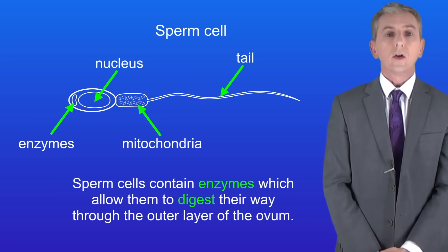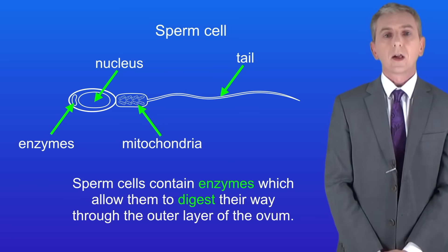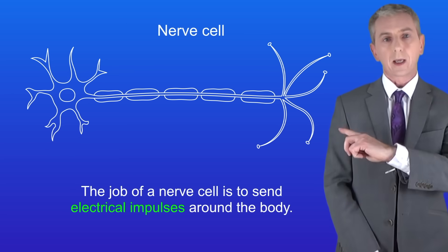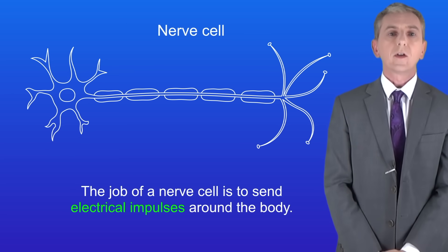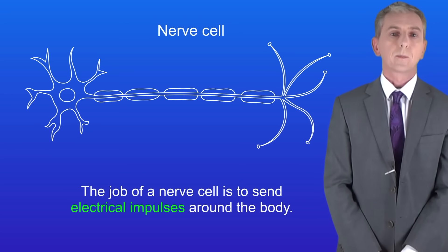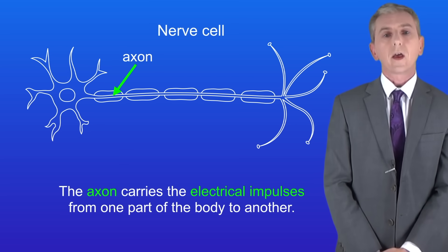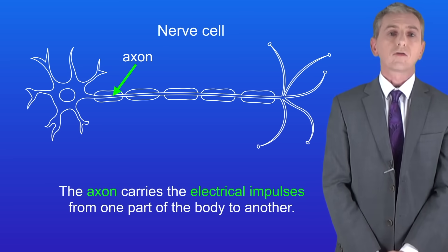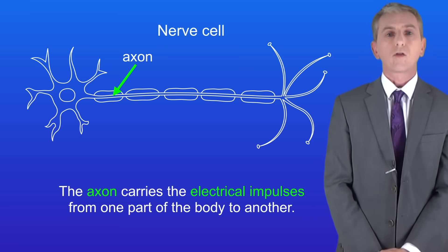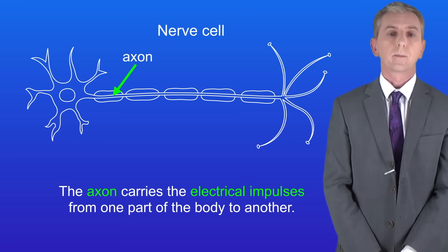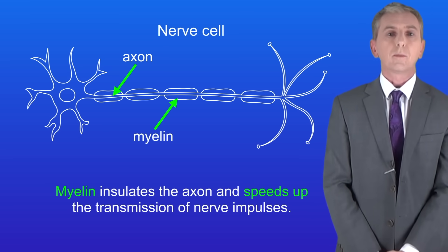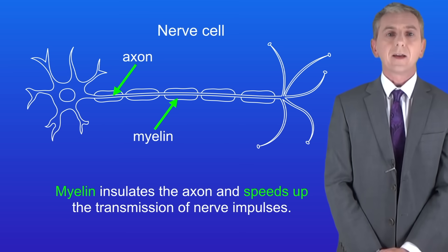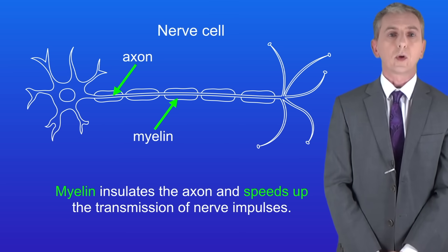The next type of cell we're looking at are nerve cells. The job of a nerve cell is to send electrical impulses around the body. Looking at the structure, we can see that nerve cells have a long axon. The axon carries the electrical impulses from one part of the body to another. The axon is covered with myelin, which insulates the axon and speeds up the transmission of nerve impulses.